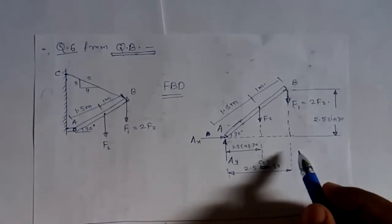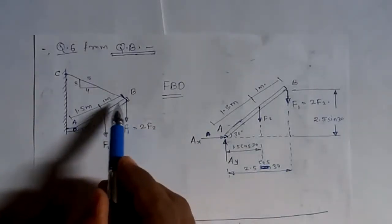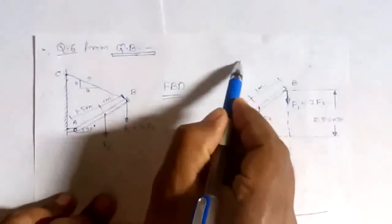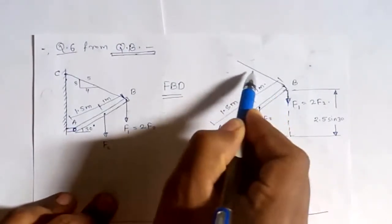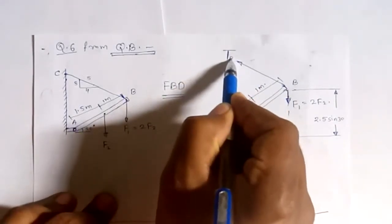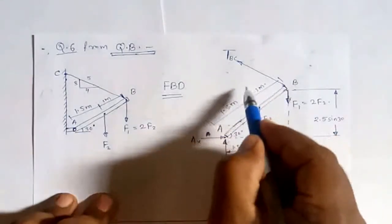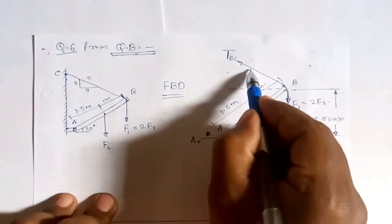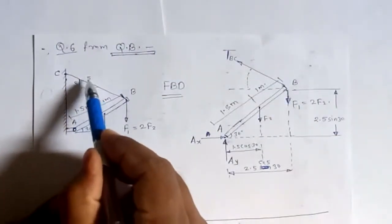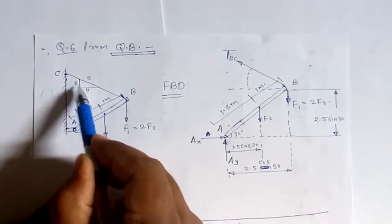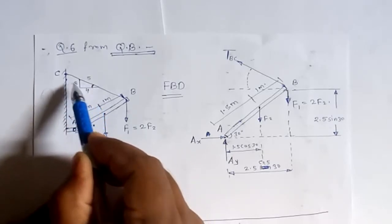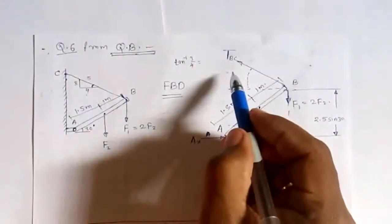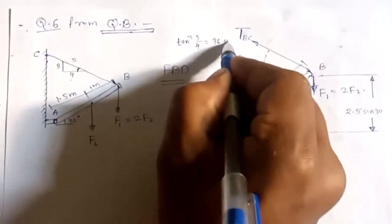There is also tension in cable BC, denoted TBC. The angle made by the cable with the horizontal can be calculated from the 3-4-5 triangle geometry, giving approximately 36.9 degrees. So the x-component of TBC involves cos 36.9 and the y-component involves sin 36.9.